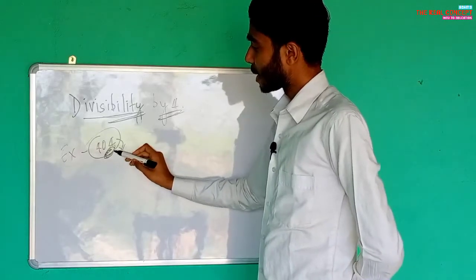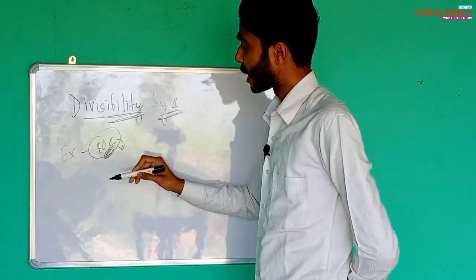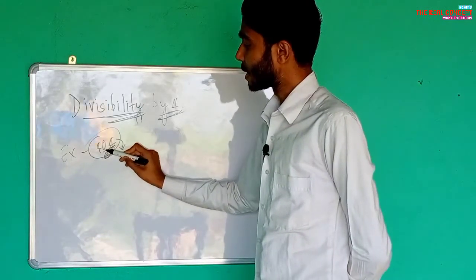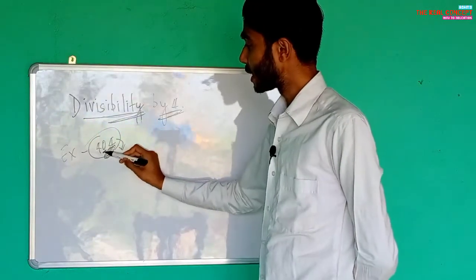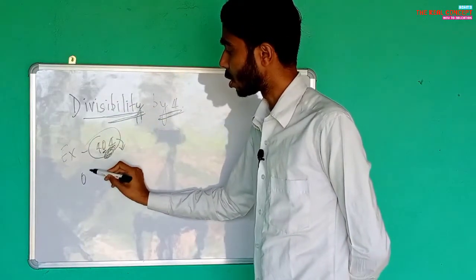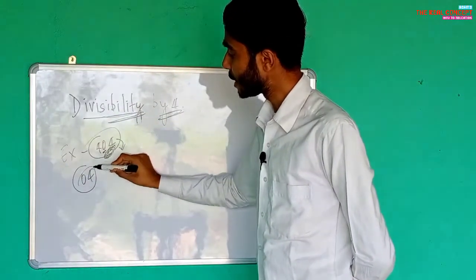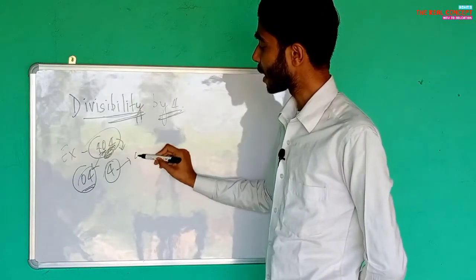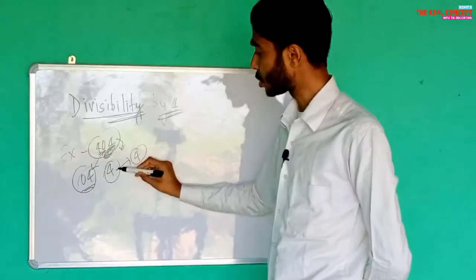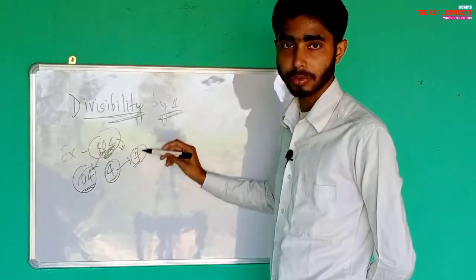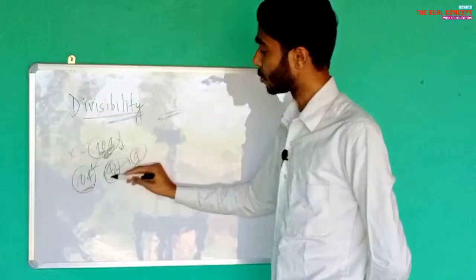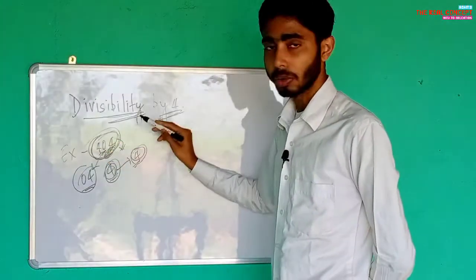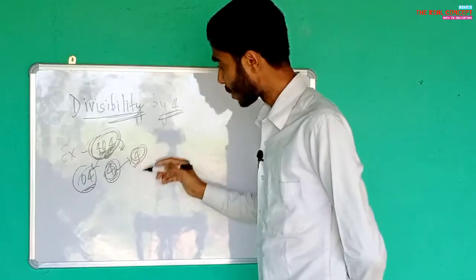The rule for divisibility by four is: we check the ones place and tens place together — that is, the last two digits. For the number 404, the ones and tens place digits form the number 04, which is equal to four. Since four is divisible by four, 404 is divisible by four.